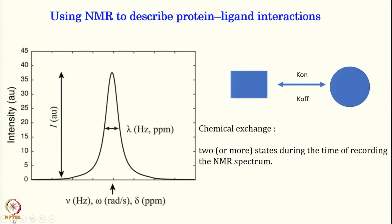Let us start with how we can get all these parameters from the NMR signal. Take two molecules — one protein interacting with a small molecule, changing its conformation upon binding. There is an on-rate of association and an off-rate of dissociation. Some exchange is happening there, and we can define this as chemical exchange — where two or more states are changing during the time of recording the NMR spectrum. We are going to use this term again and again.